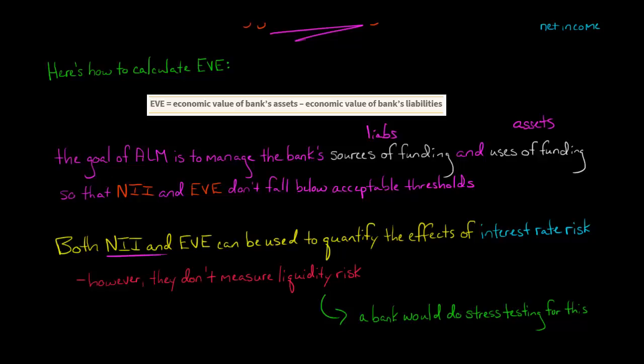However, net interest income and economic value of equity, even though they're incredibly important metrics for asset liability management, they can't be used to measure liquidity risk. So we're going to talk later. I'll have a video about value at risk, and we'll talk about how a bank would do stress testing and look at hypothetical scenarios and come up with a contingency plan for dealing with liquidity risk.